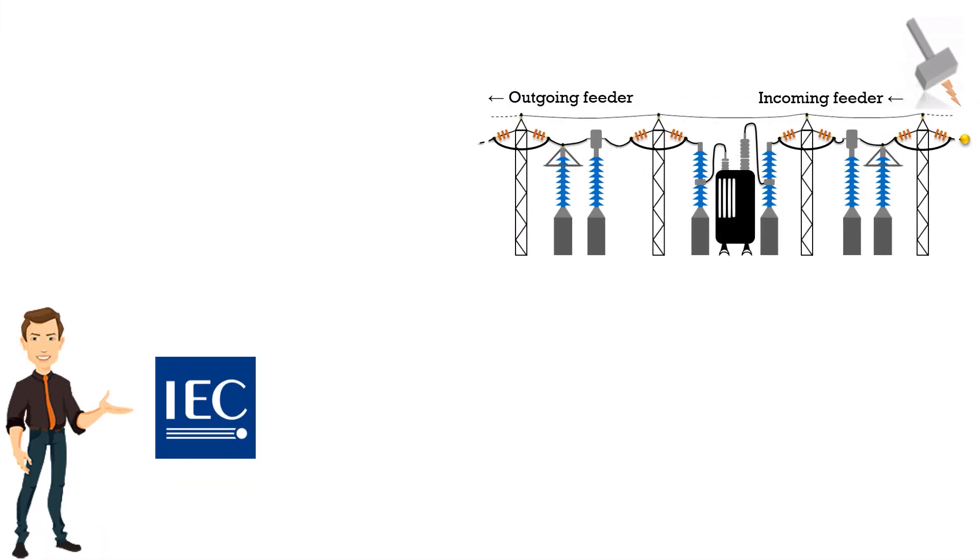Continuous Operating Voltage (COV) is defined in IEC as the maximum permissible RMS value of power frequency voltage that can be applied across arrestor terminals while complying with operating duty test requirements.